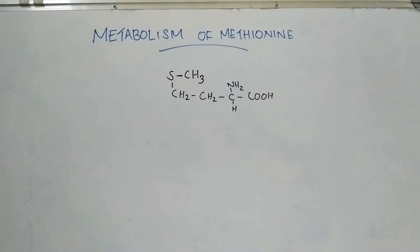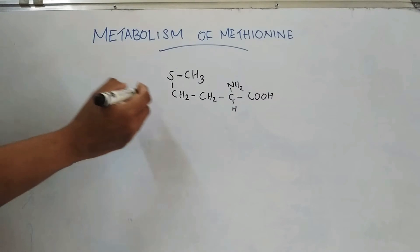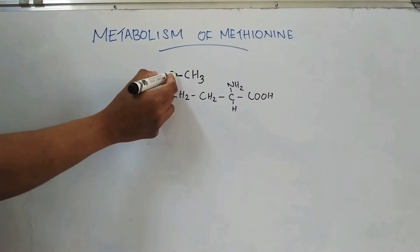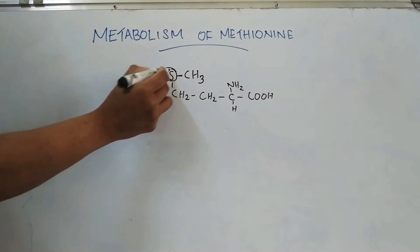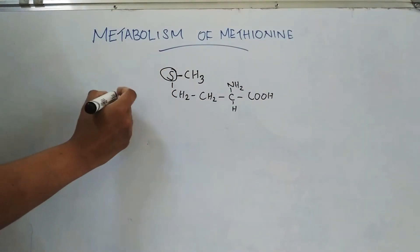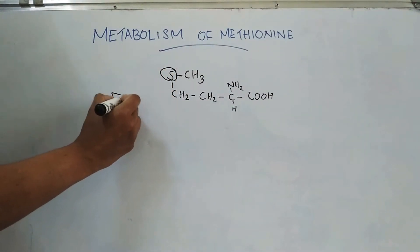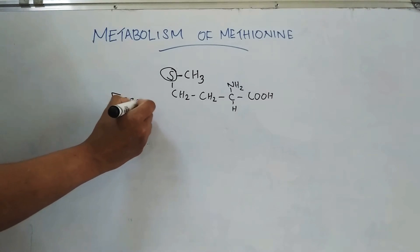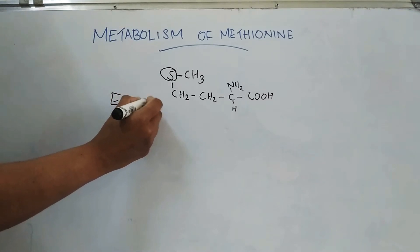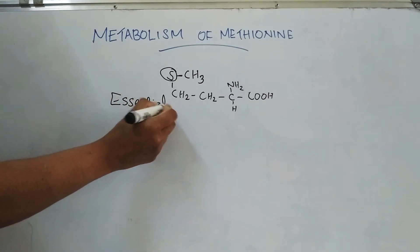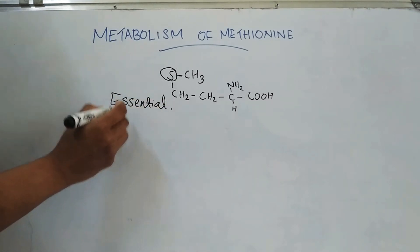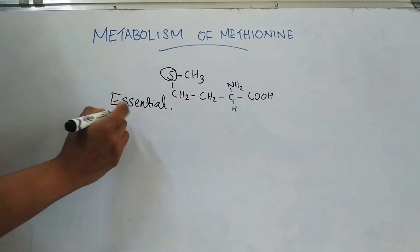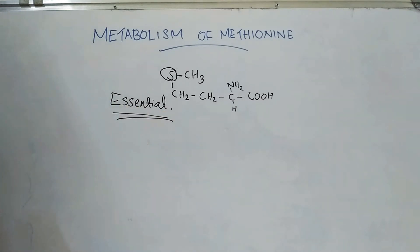Hello everyone. Today we will discuss the metabolism of methionine. Methionine is a sulfur-containing amino acid and it is an essential amino acid, so it has to be supplied in the diet.